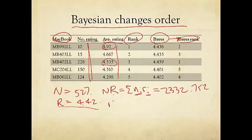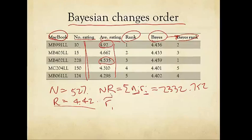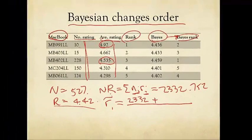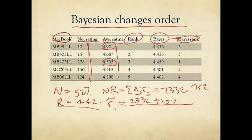So let's compute, for example, R1 tilde. This is the Bayesian adjusted average rating for product one. That would be 2332, n times r, plus 10 times 4.92.